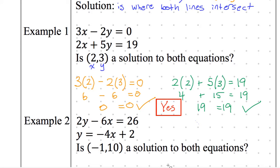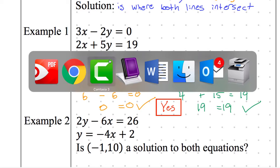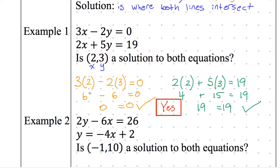Quick question: if one equation gave 3 equals 0 (doesn't work) and the other gave 19 equals 19 (works), what would the answer be? It has to satisfy both equations. The answer would be no. It has to work in both equations — not just one.